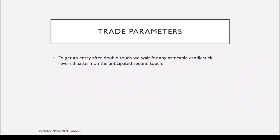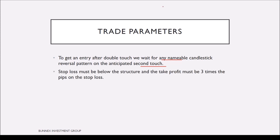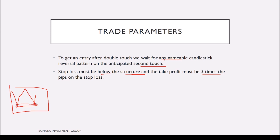To get an entry after the double touch, we need to wait for any nameable candlestick reversal pattern on the anticipated second touch — such as bullish or bearish engulfing patterns, hammers, pin bars, and others. The stop loss must be below or above structure, meaning 10 to 15 pips below the lowest value of that structure, and the take profit must be three times the pips on the stop loss.